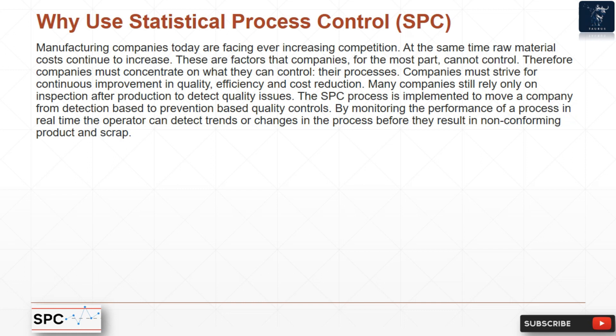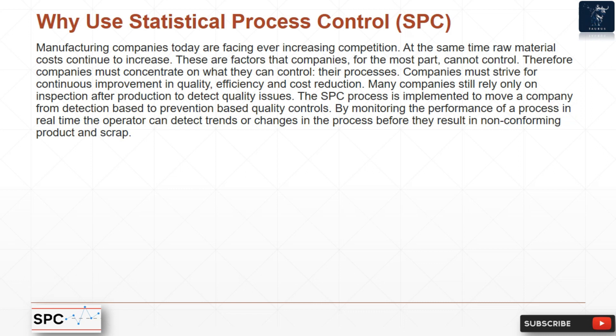Why use SPC? Manufacturing companies today face ever-increasing competition while raw material costs continue to rise — factors companies largely cannot control. Therefore, companies must concentrate on what they can control: their processes. Companies must strive for continuous improvement in quality, efficiency, and cost reduction. Many companies still rely only on inspection after production to detect quality issues. SPC moves a company from detection-based to prevention-based quality controls by monitoring process performance in real time, allowing operators to detect trends before they result in non-conforming product and scrap.